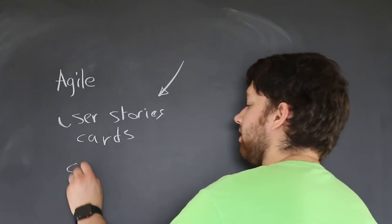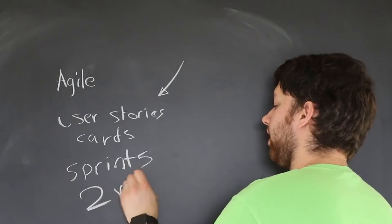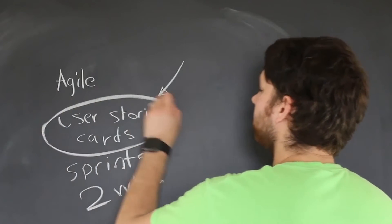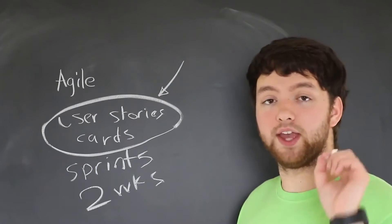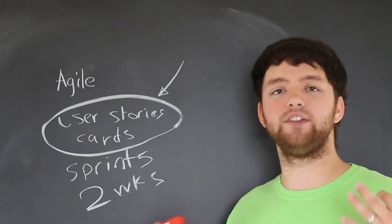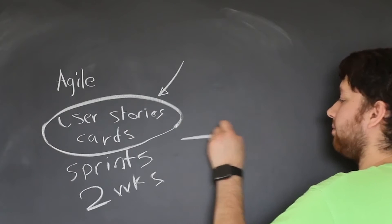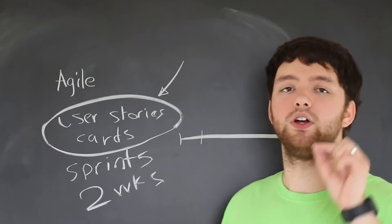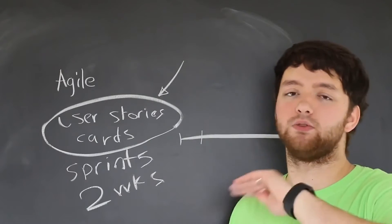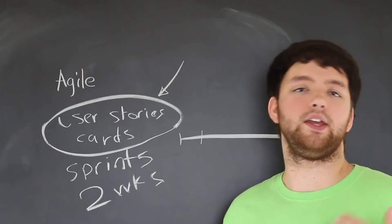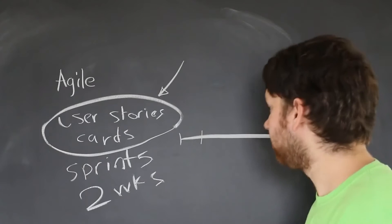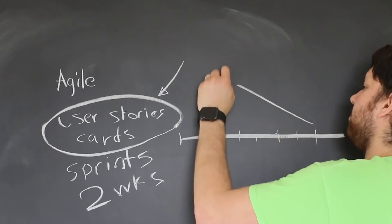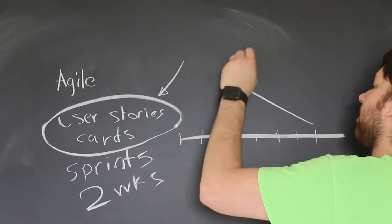The next thing is that we have sprints. Sprints are usually two weeks long, and at the beginning of each sprint, we figure out what user stories or cards we are going to focus on for those two weeks. At the end of every two weeks, we should have a completely functional product. Two weeks down the road, we should have a very simple but functional application — it will compile, there are minimal bugs, and even though it's simple, the application still works. Then we essentially add features every two weeks until we have what's known as the MVP, or minimal viable product.